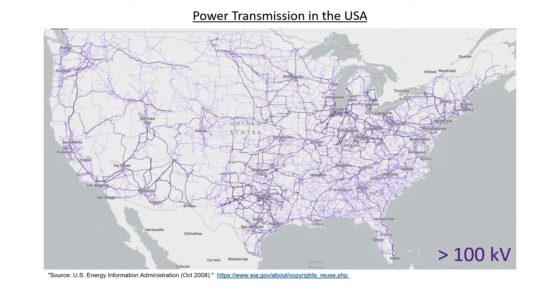In order to learn more about how electricity is distributed throughout the grid, we're going to focus on how one particular small town in the center part of the U.S. gets its electricity. Right now, the map is showing all the power lines in the United States that have a voltage over 100 kilovolts. Therefore, we're not seeing all of the power lines because there are actually a lot of power lines with smaller voltages. Let's zoom in here to the boxed area and take a closer look at these power lines.